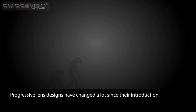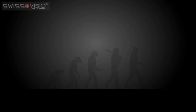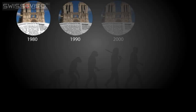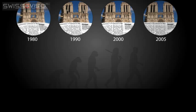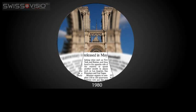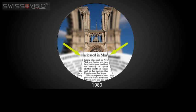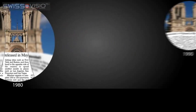Progressive lens designs have changed a lot since their introduction. These four options will always be shown to you at a shop when purchasing progressive lenses. This RX progressive design, with the power distribution on the front, was introduced in the 1980s. Note the narrowness of the design and the extreme distortion on the sides.